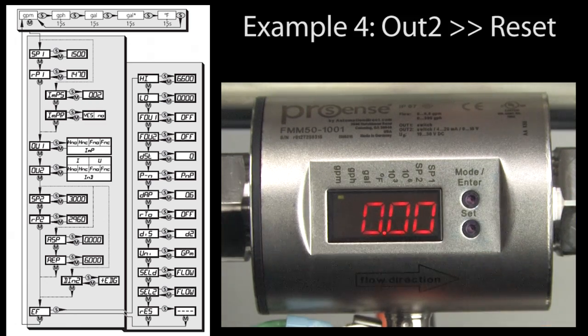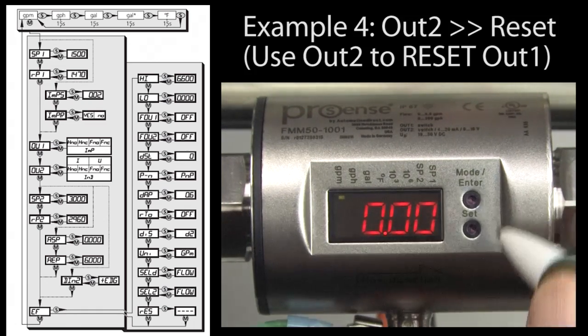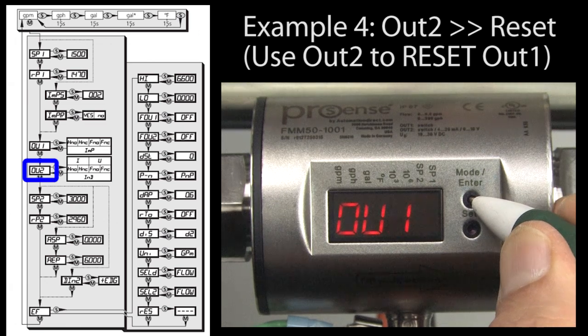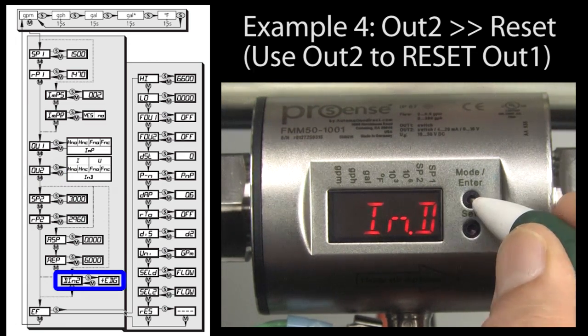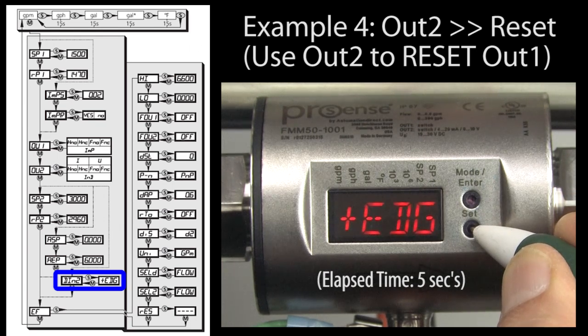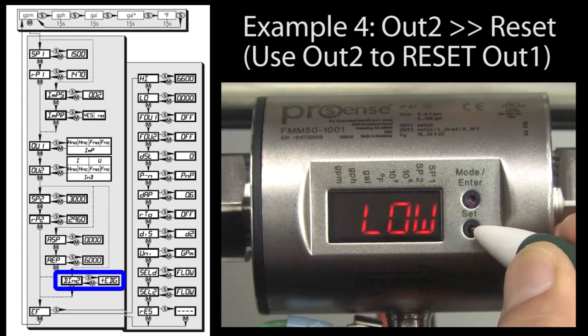Let's change output 2 to be an input that we'll use to reset output 1. Just go to OUT2 and select ND. When you do that, this option becomes available where you can make the reset logic high, logic low, rising or falling edge.